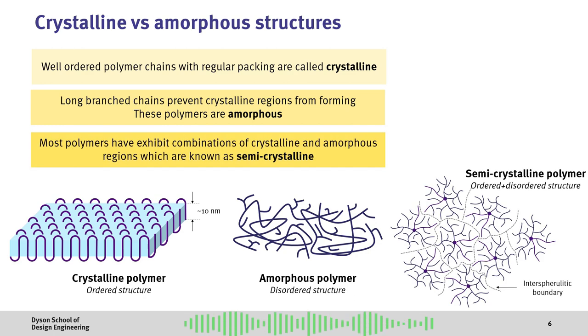In most polymers, they exhibit a combination of crystalline and amorphous regions, and therefore we call these semi-crystalline polymers.